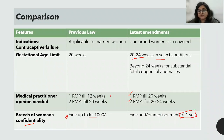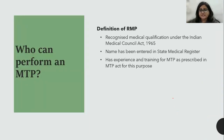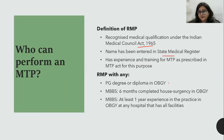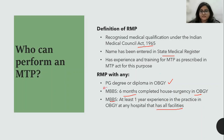An RMP is someone who is registered under the Medical Council Act 1965, whose name is in the State Medical Register, and who has had training and experience in MTP as prescribed. The qualifying criteria are: a postgraduate degree or diploma in Obs and Gynae, OR six months of house surgency in Obs and Gynae, OR being an MBBS with at least one year of experience in Obs and Gynae practice at a hospital with all facilities.